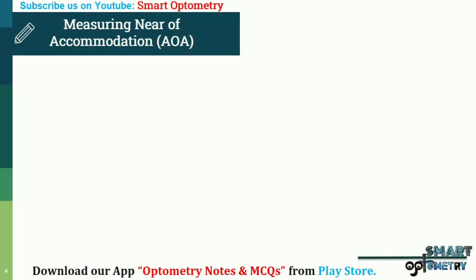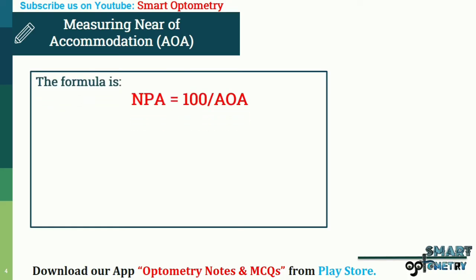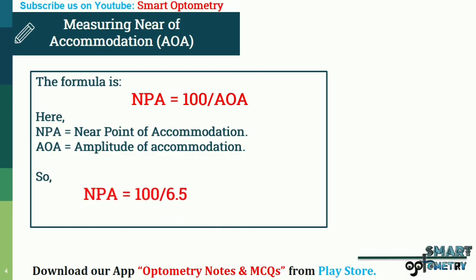To identify the near point of accommodation (NPA), the formula is: NPA = 100 divided by AOA (amplitude of accommodation). So NPA = 100 divided by 6.5, which equals 15.38, or approximately 15 cm.